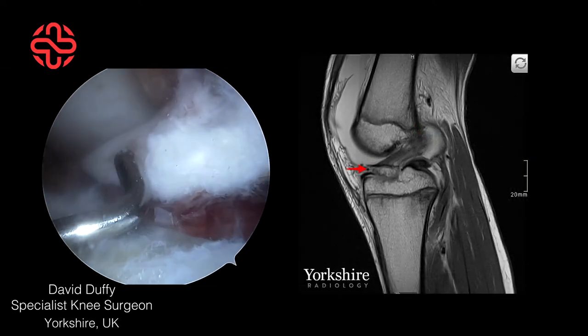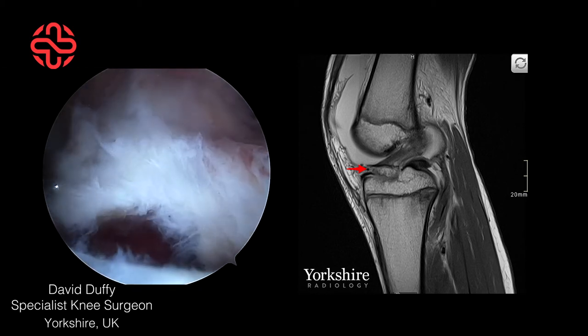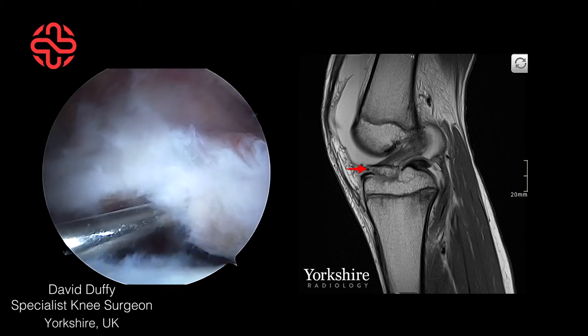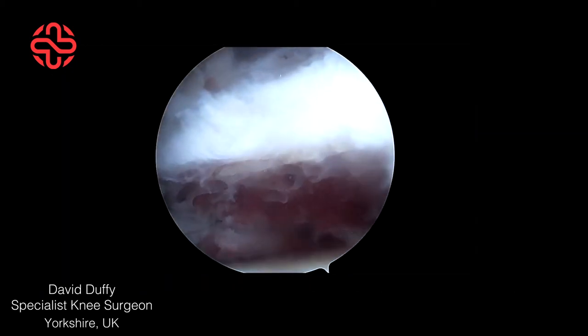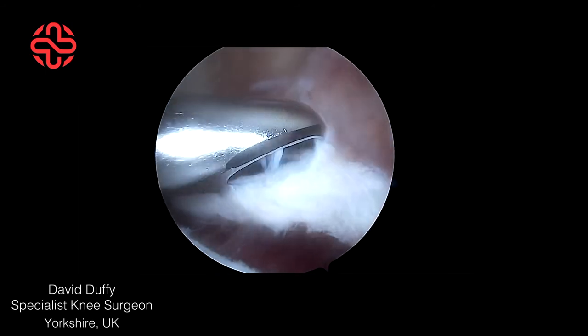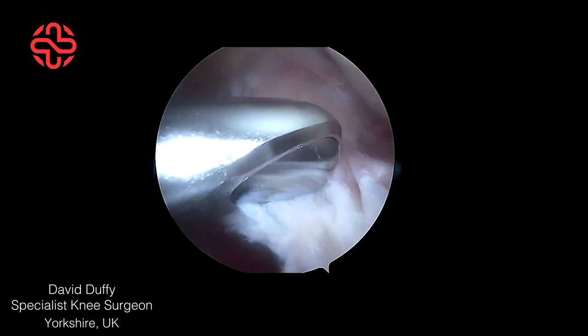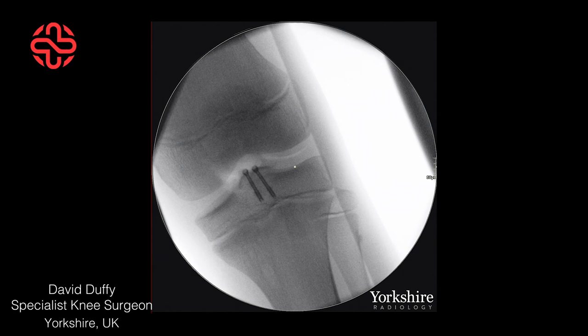The displaced, elevated anterior edge of the fragment is highlighted on the MRI, and this feature can be appreciated in the corresponding arthroscopic surgical footage. In this case, headless compression screws, which do not cross the growth plate, were used for fixation.